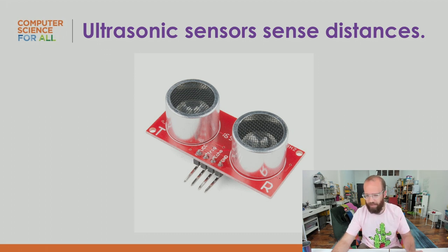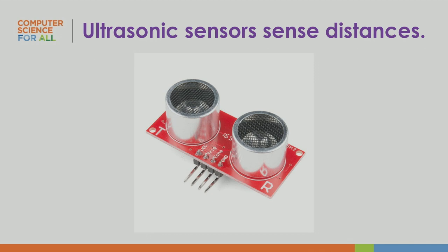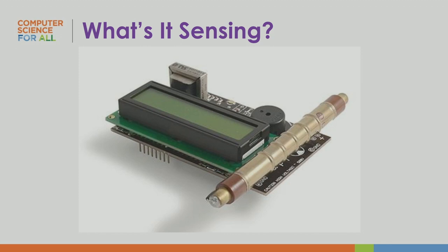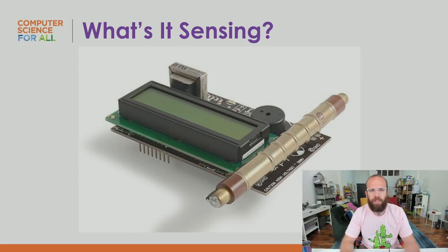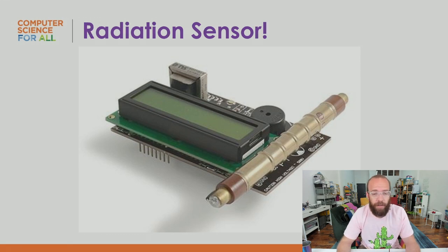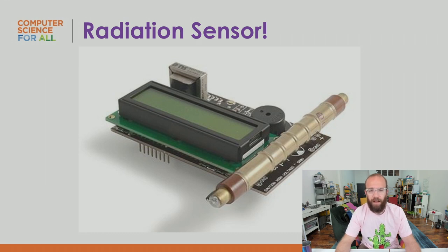Here's a mysterious one — this is detecting radiation. It's a radiation sensor developed shortly after the earthquake in Japan and the nuclear power plant meltdown, so that citizens could go around and measure radioactivity on their own. It can hook up to a Raspberry Pi or an Arduino and helps people measure radiation like a Geiger counter.